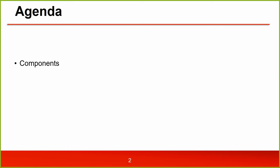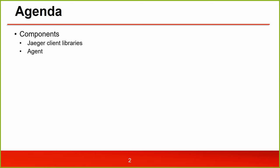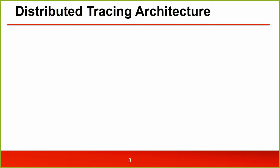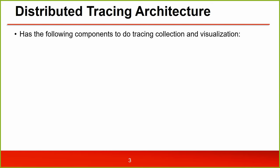The agenda is: components of Jaeger, Jaeger client libraries - we will study the list of client libraries in a separate session, but right now we will understand what client libraries are. Then agent, collector, query, ingester, and APIs - all these components we are going to understand with respect to Jaeger. Then sampling - data collection from the application. This is a distributed tracing architecture.